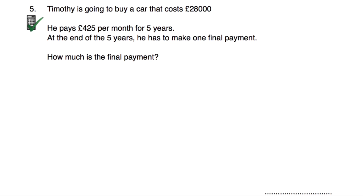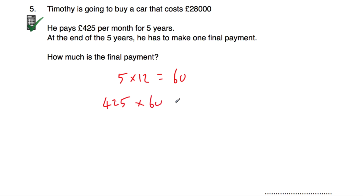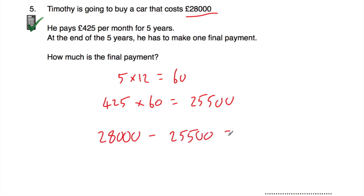Question number five: Timothy is going to buy a car that costs £28,000. He pays £425 per month for five years, then makes one final payment. Five years is 60 months, so 425 multiplied by 60 equals £25,500 paid over five years. The car costs £28,000, so £28,000 minus £25,500 equals £2,500. Timothy has to pay £2,500 as his final payment.